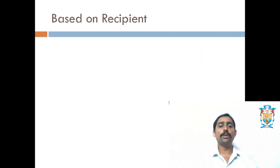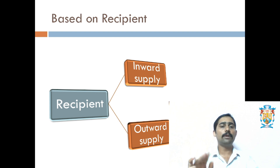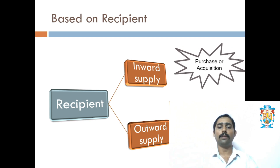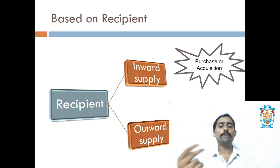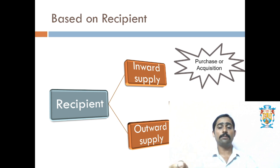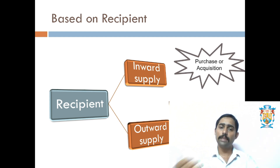Next comes based on recipient — the person who will receive the product. Based on recipient, we have two types: inward and outward supply. In inward supply, we receive the product, we get the ownership, but money goes out. Whereas in outward supply, the product goes out and money comes in. Outward supply includes sale, transfer, barter, and exchange. Inward supply covers purchase or acquisition — we get the items and ownership, but money goes out.